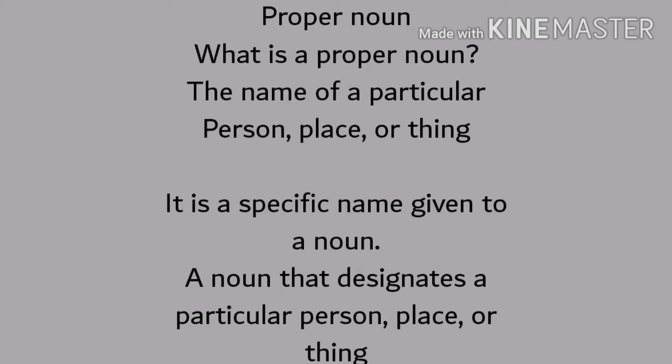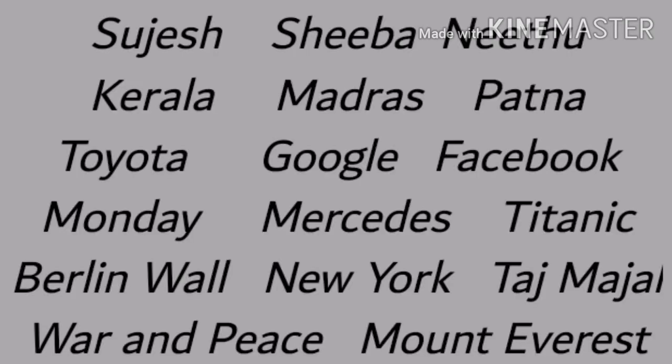Here are a few examples of proper nouns: Sujish, Sheba, Neetu, Kerala, Madras, Patna, Toyota, Google, Facebook, Monday, Mercedes, Titanic, Berlin Wall, New York, Taj Mahal, War and Peace, Mount Everest. These are all examples of proper nouns.